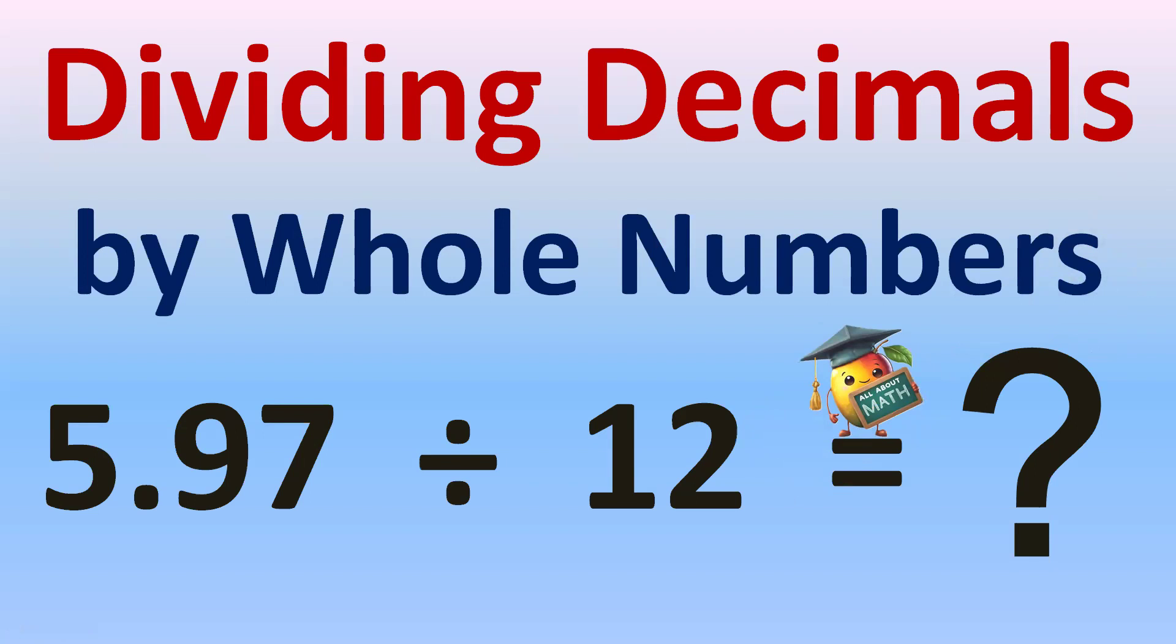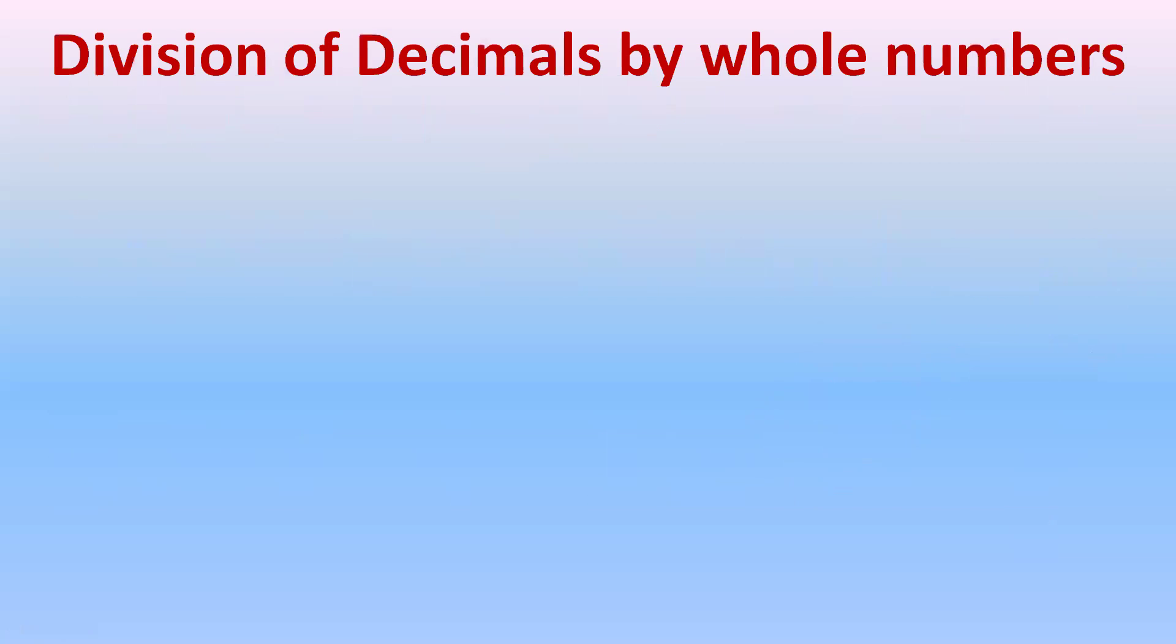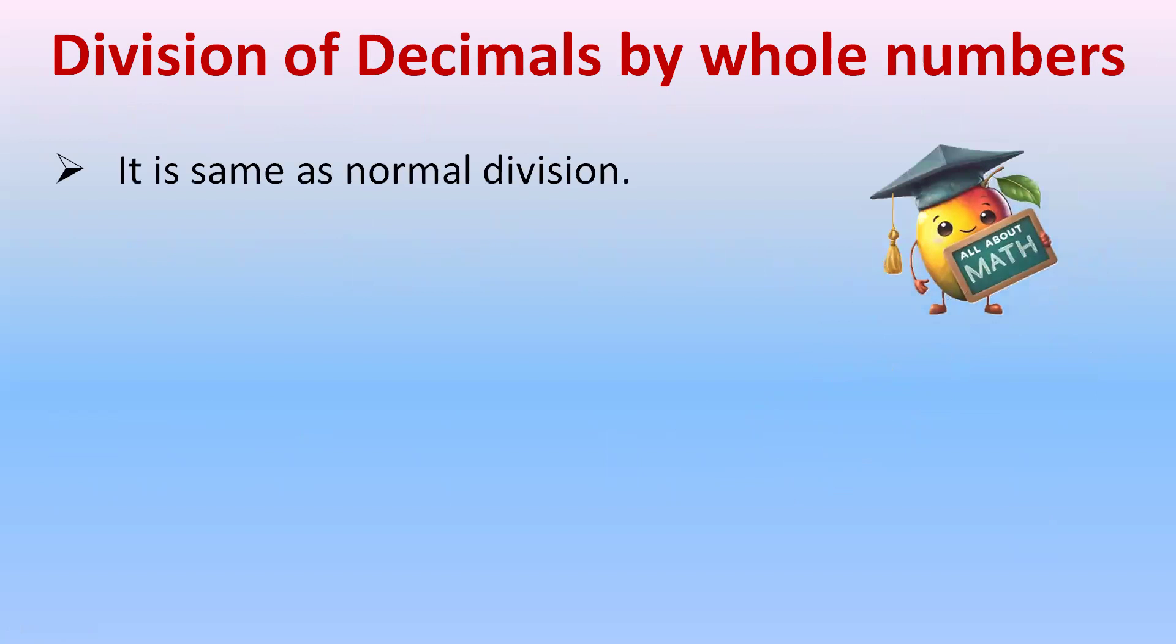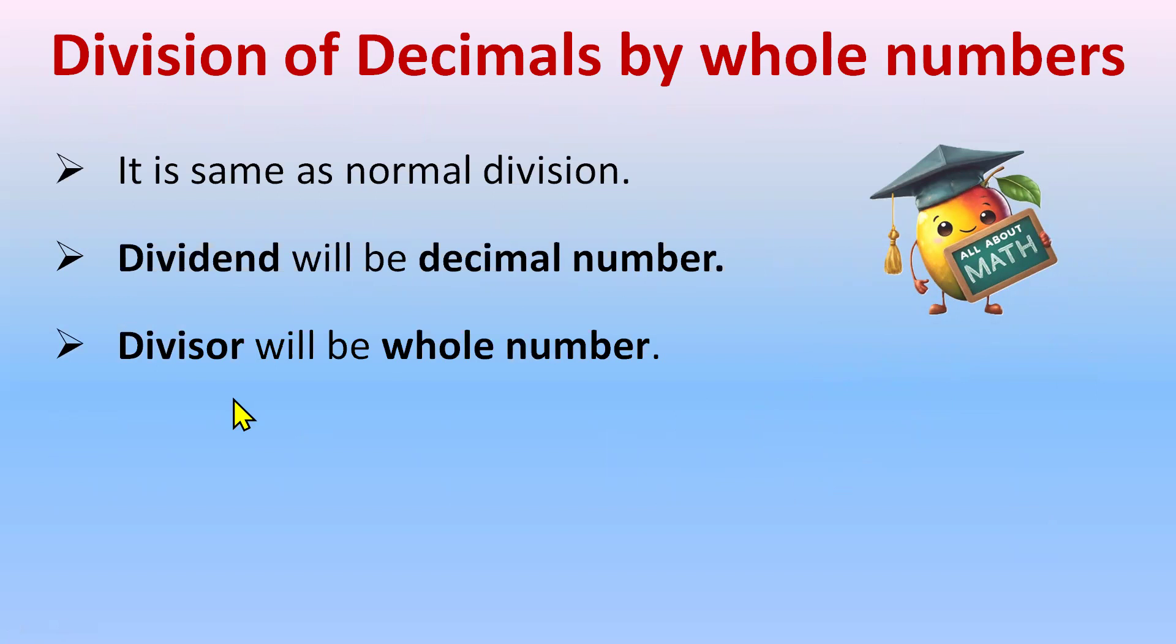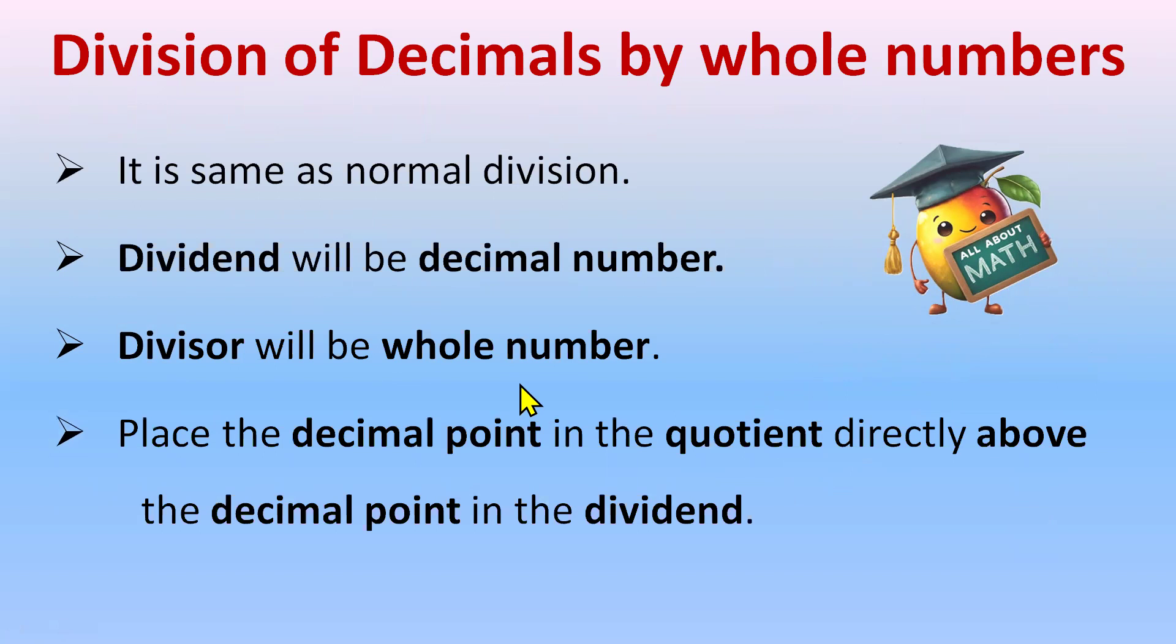Dividing Decimals by Whole Numbers. Division of decimals by whole numbers is the same as normal division. The dividend will be a decimal number, the divisor will be a whole number, and place the decimal point in the quotient directly above the decimal point in the dividend.